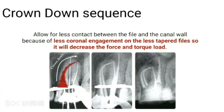Crown-down sequence or crown-down technique is the safest technique for shaping root canals because we have less force or less stress on the apically progressing files or instruments.